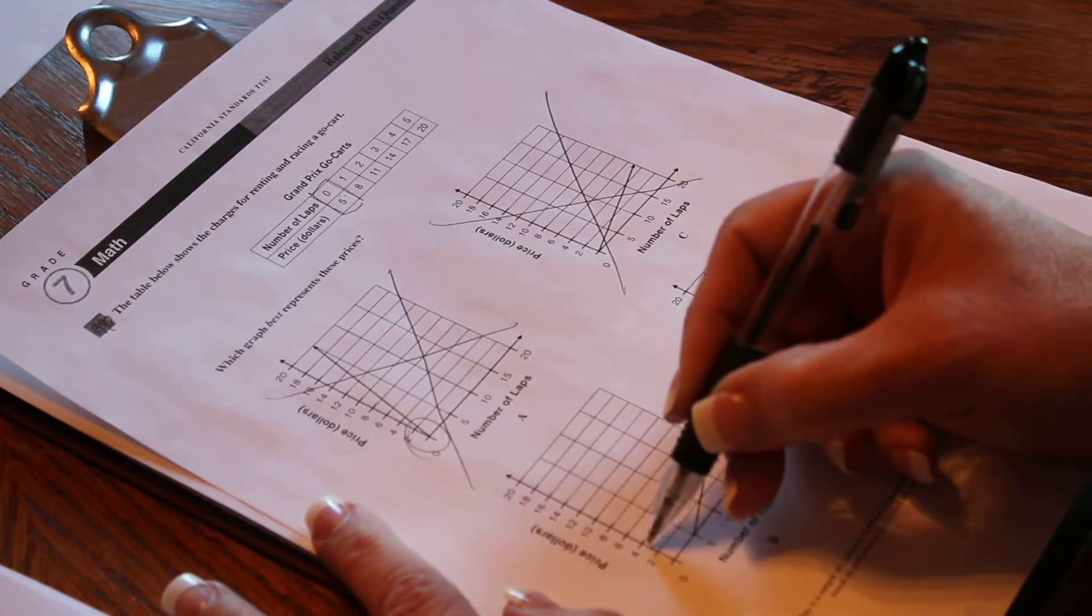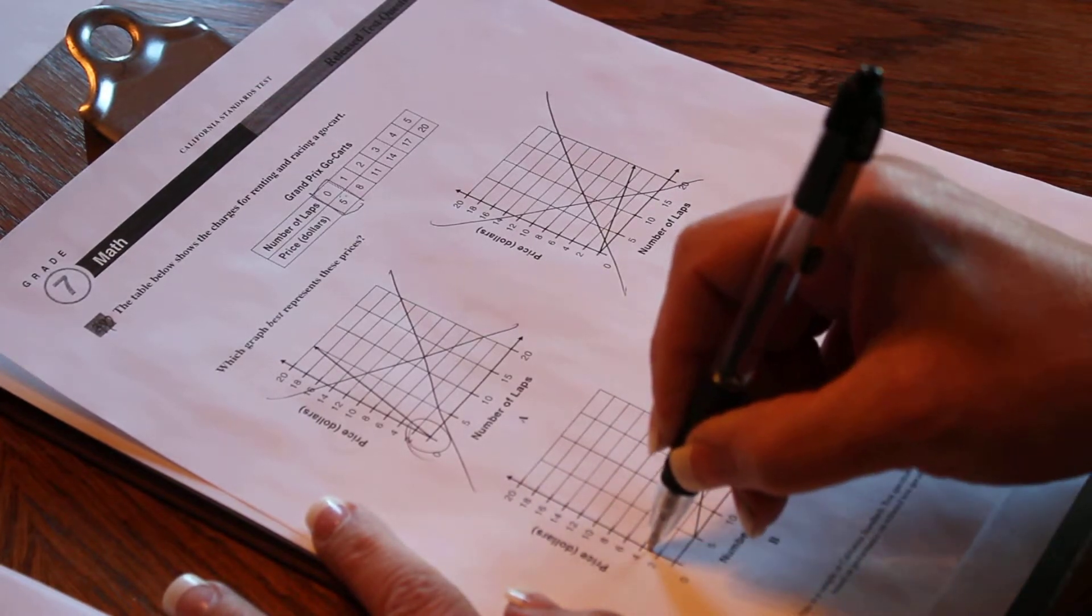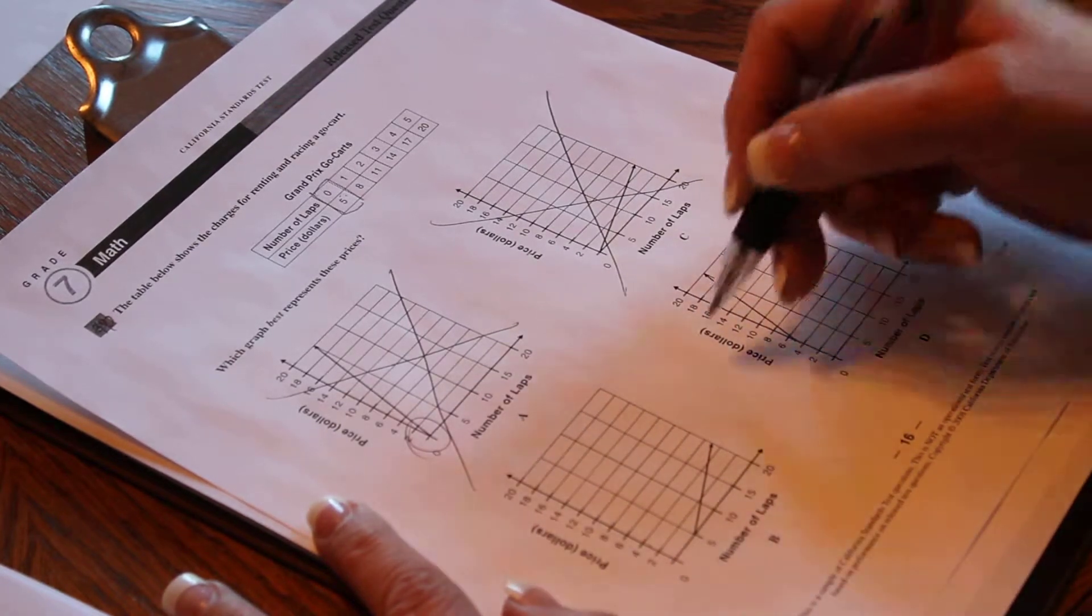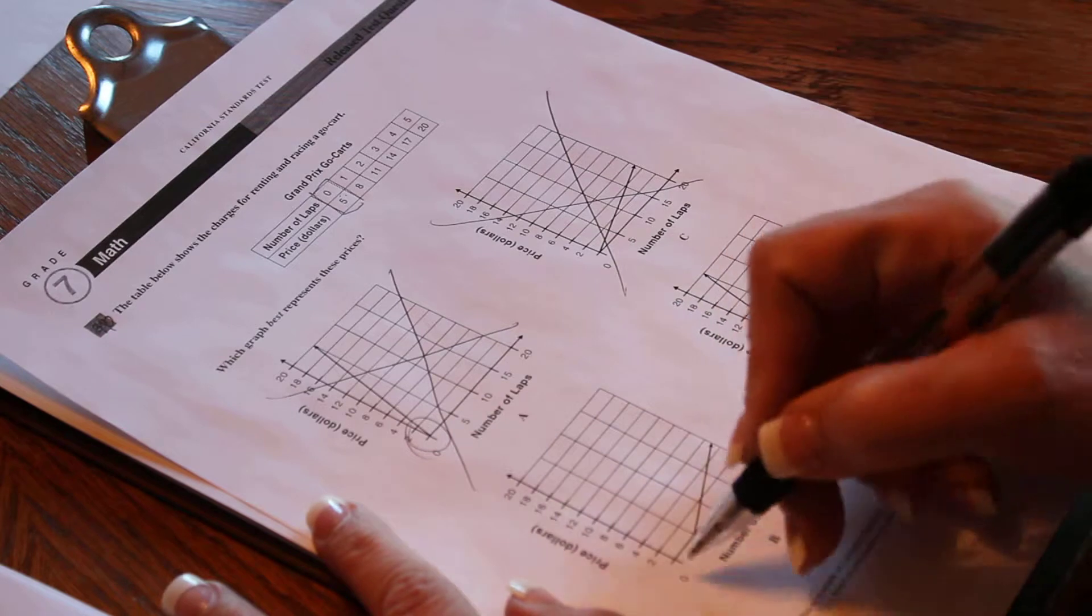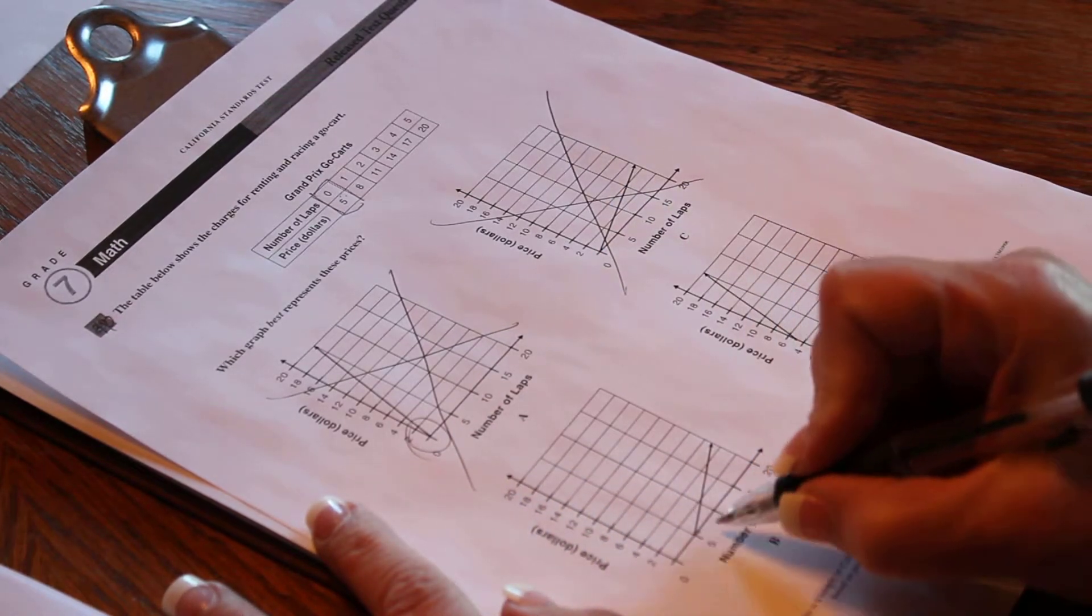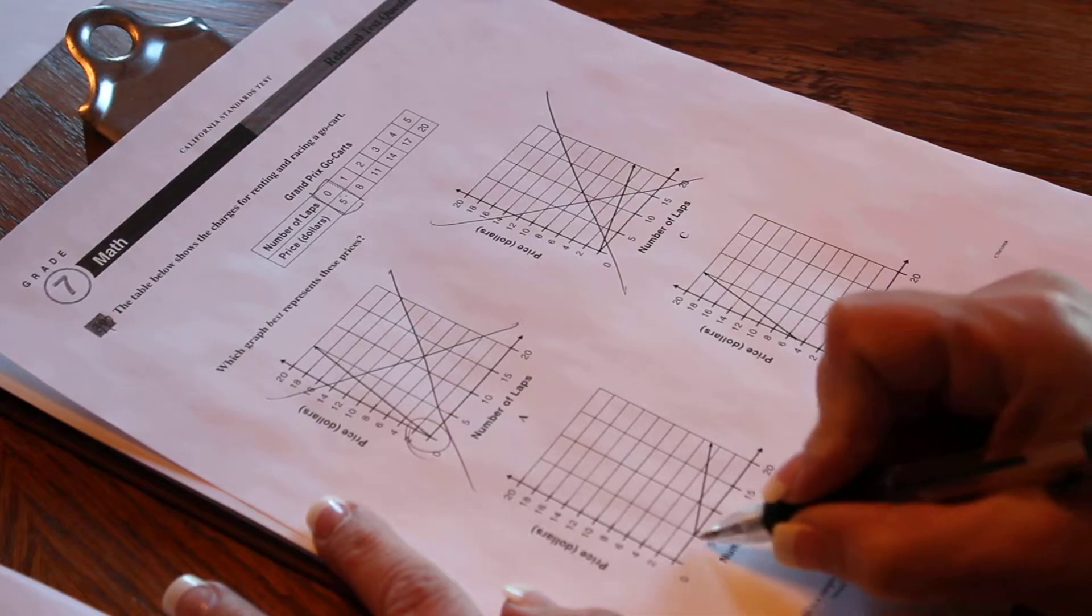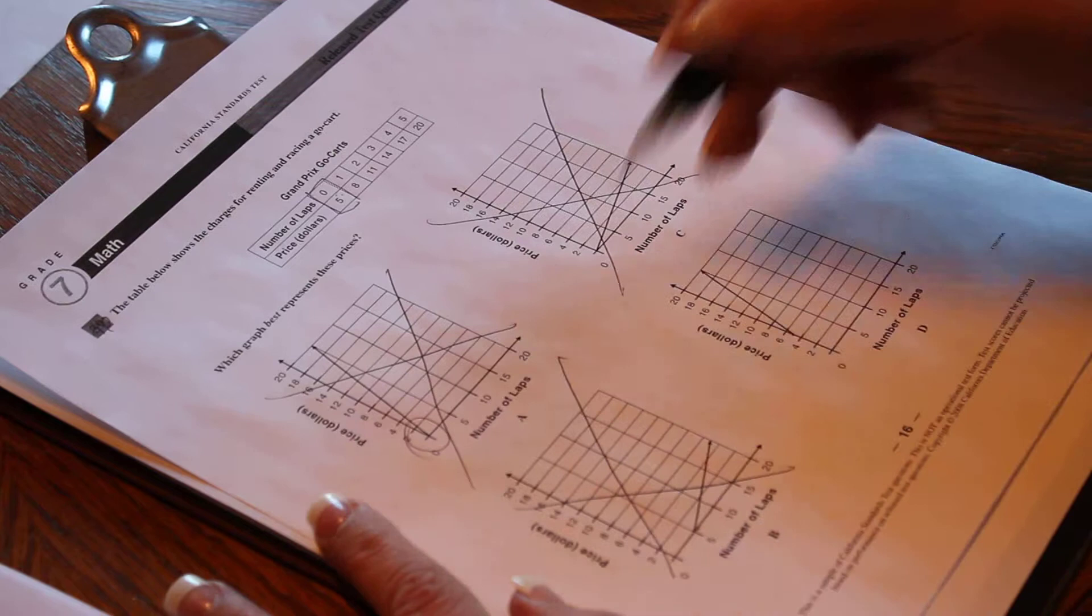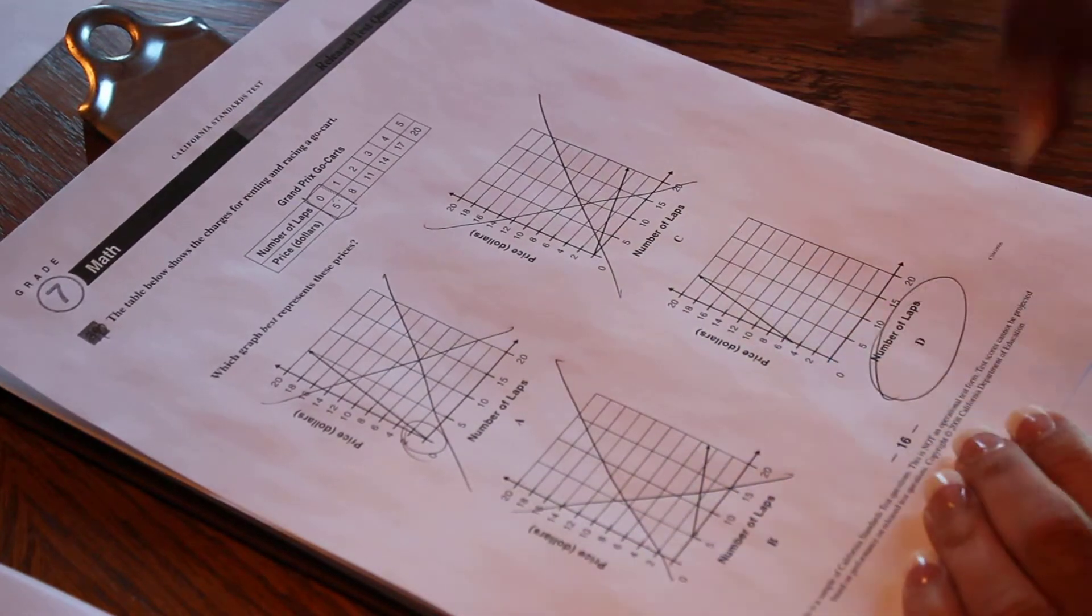Is 5 represented by zero laps? Here 5 is at zero laps. So the price is 5. Here where's the price? The price is zero for 5 laps you get zero price. Is this correct? No. So the correct one must be D.